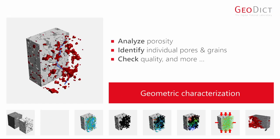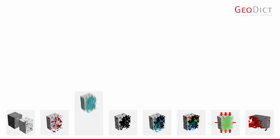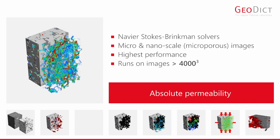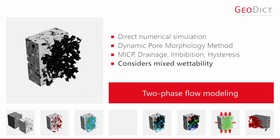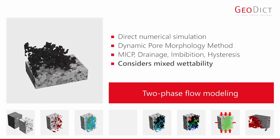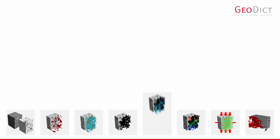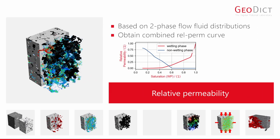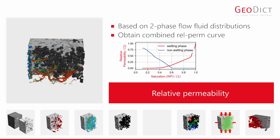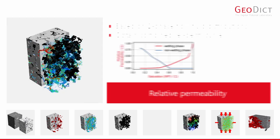Characterize 3D geometries for accessible porosity and individual pores and grains, or check the quality of digital sandstones. Determine the absolute permeability of digital reservoir rocks with the fastest and most efficient approach available on the market. Compute the capillary pressure curve in digital setups ranging from MICP to mixed wet inhibition, and easily predict the relative permeability of reservoir rocks to advance the digital workflow towards enhanced oil recovery.